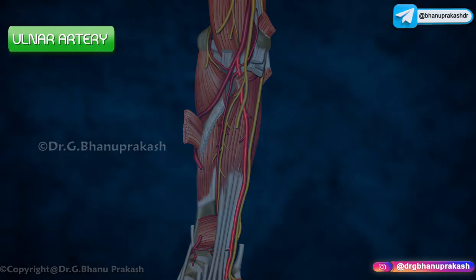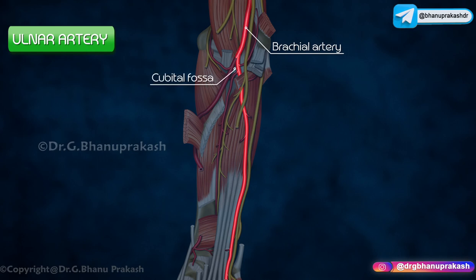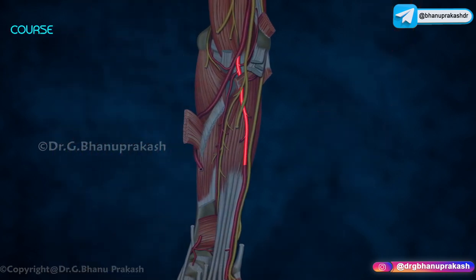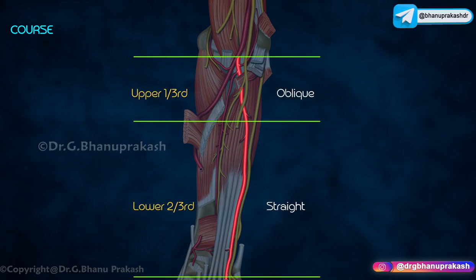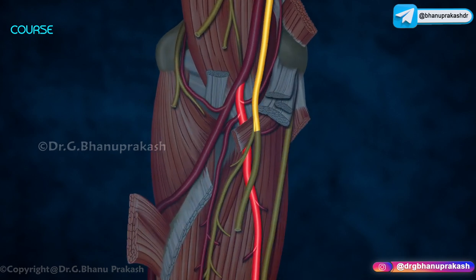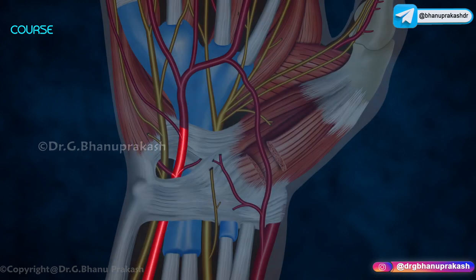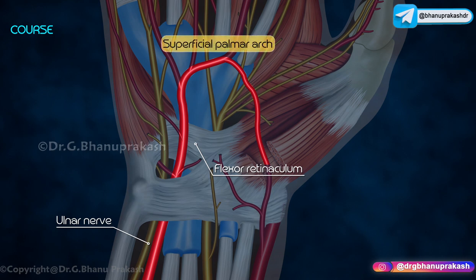The ulnar artery is the largest terminal branch of the brachial artery and arises in the cubital fossa at the level of the neck of the radius. It travels downwards and reaches the medial side of the forearm. Its course is oblique in the upper one-third and straight in the lower two-thirds. The median nerve crosses the ulnar artery from medial to lateral side, 2.5 centimeters distal to the elbow. It enters the hand by passing superficial to the flexor retinaculum, just lateral to the ulnar nerve, and ends by giving rise to the superficial palmar arch of the hand.